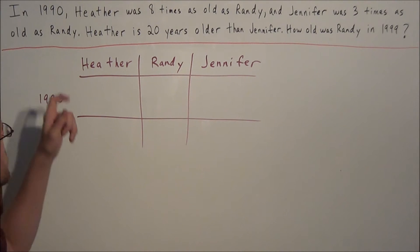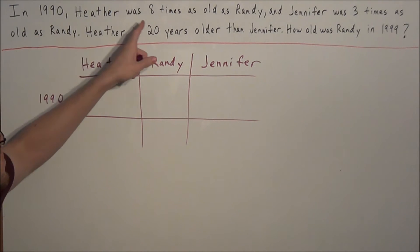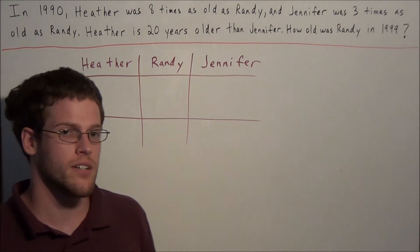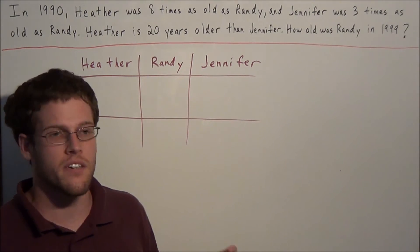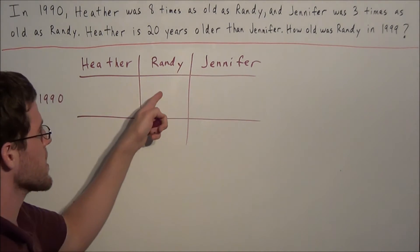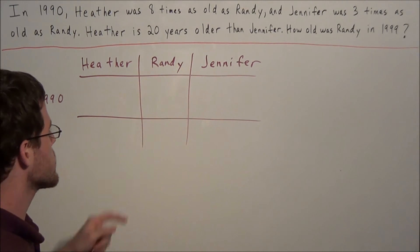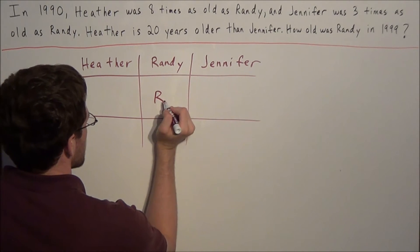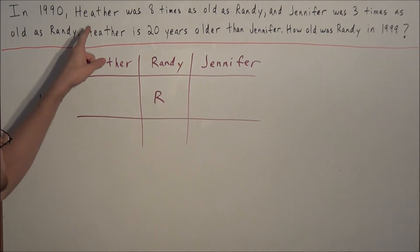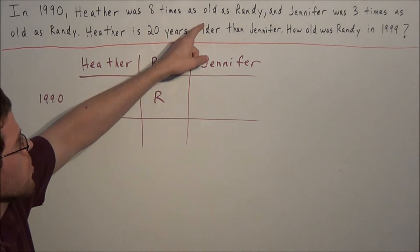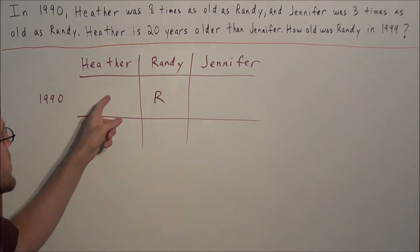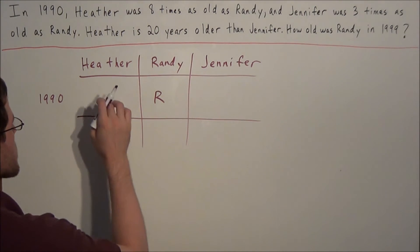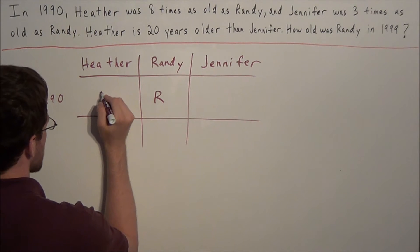So now we re-read the first sentence. In 1990, Heather was 8 times as old as Randy and Jennifer was 3 times as old as Randy. So since both girls are being compared to Randy, let's set his age as the variable. We'll say that Randy is r years old. So now we read, Heather was 8 times as old as Randy. So if Randy is r years old and Heather is 8 times as old as Randy, then we can set her age equal to 8 times r.